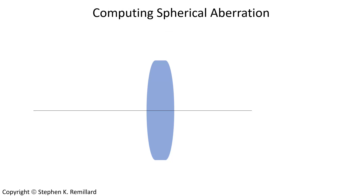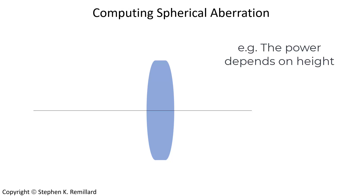Spherical aberration is the first of the five Seidel aberrations. It is a result of incoming rays not focusing to the same point on the optic axis. The higher the ray is above the optic axis, the farther from the paraxial focal point it will be. A paraxial ray coming in parallel to the optic axis strikes the first surface of the lens at a certain angle, refracts, strikes the second surface at another incident angle, refracts again, and finally hits the optic axis at the paraxial focus.